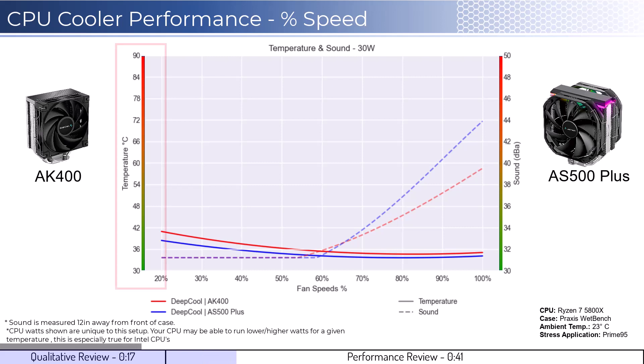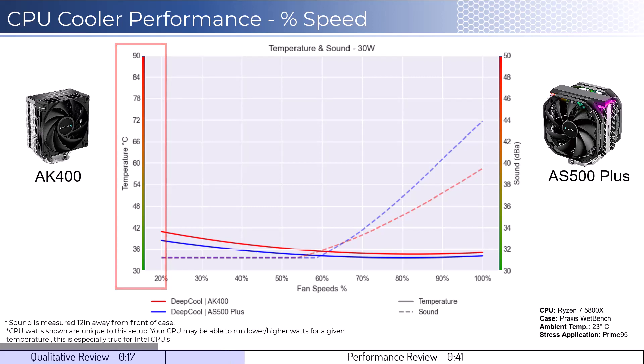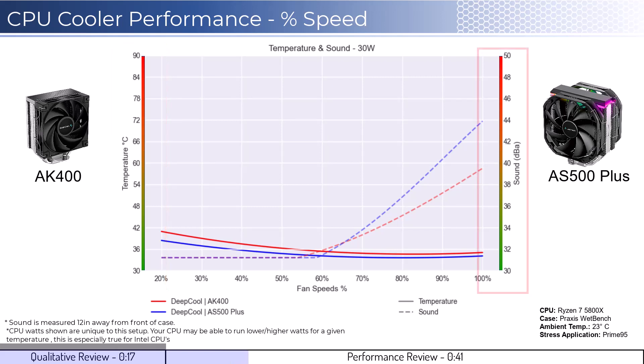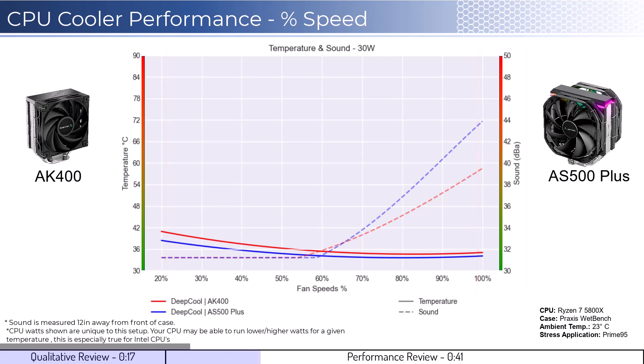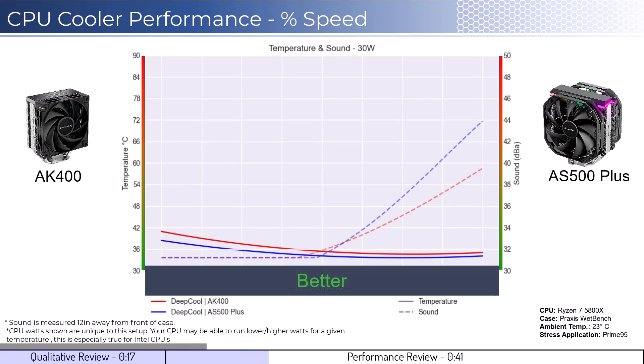To orient you to the graph, the left side shows temperatures corresponding to the solid lines, with the right side showing noise levels represented by the dashed lines. As a general rule, lower is always better for the data shown.